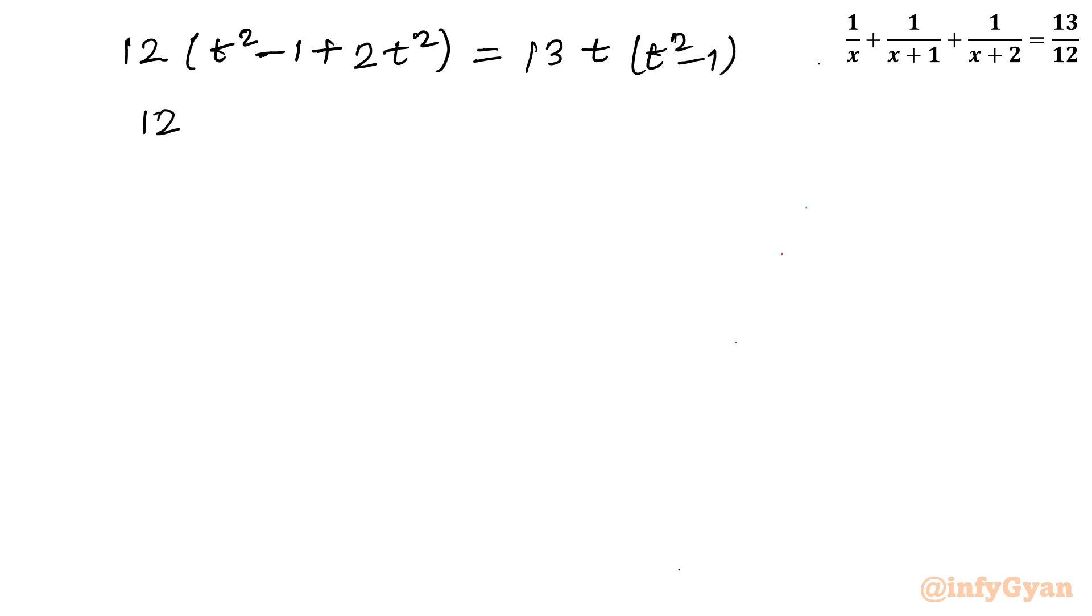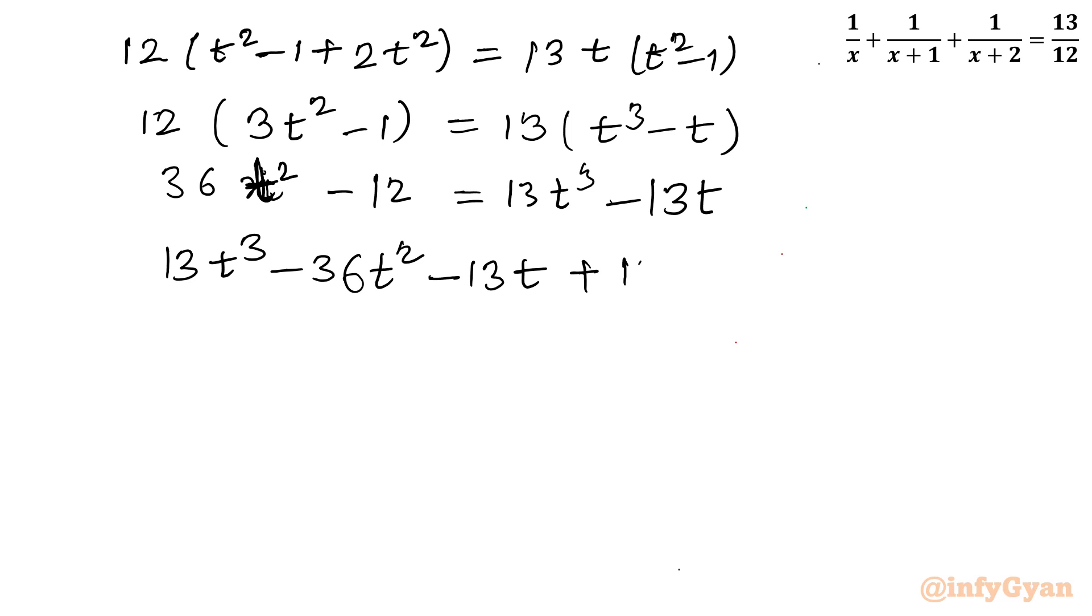Let us simplify. So 12 times 3t square minus 1 equal to 13 times t cube minus t. Let us expand. So it will give us 36t square minus 12 equal to 13t cube minus 13t. Take all the terms to LHS. So I can write 13t cube minus 36t square minus 13t plus 12 equal to 0.